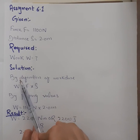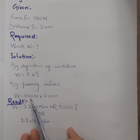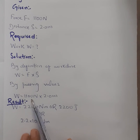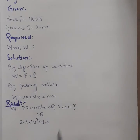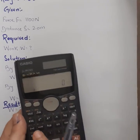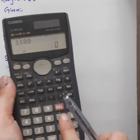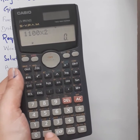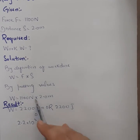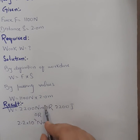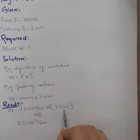The situation is simple. Solution: work equals force into distance. Putting in the values — force is 1100 newton, distance is 2.0 meter — so 1100 multiplied by 2.0 gives us 2200. The unit is newton meter, and since the SI unit of work is joule, the answer is 2200 joule.